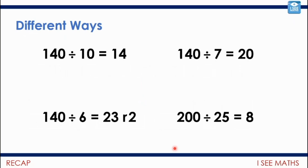Then we had a look at some examples and said, when we're doing division, we're doing it in lots of different ways. So 140 divided by 10, we're likely just to be moving the digits one place to make 14 rather than using any formal method. 140 divided by 7, we could use our times table facts — 7 times 20 is 140. 140 divided by 6, we might need a written method: I know 20 sixes are 120, and then I'd figure out how many 6s in 20. Whereas 200 divided by 25 — if we count up in 25s: 25, 50, 75, 100, 125, 150, 175, 200 — that's 8 lots of 25. So we can answer questions like that by literally adding on.